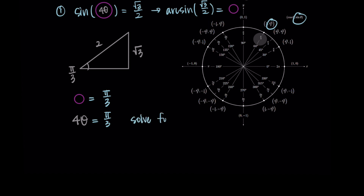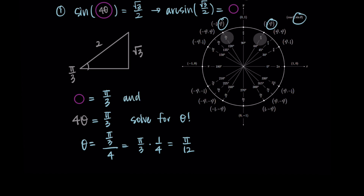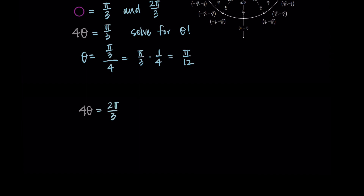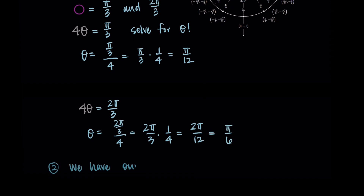Now we solve for θ — this is what's different about these examples. Normally we'd already have our solution, but here we have 4 times θ, so we divide by 4. π over 3 divided by 4 becomes π over 3 times 1 over 4, giving us π over 12. That's our first solution. Then we repeat for the second solution: 2π over 3 also gives a positive sine value of square root of 3 over 2. So if 4θ equals 2π over 3, dividing by 4 gives 2π over 12, which simplifies to π over 6. So our two solutions are π over 12 and π over 6.